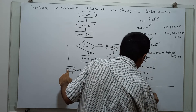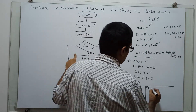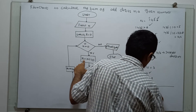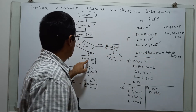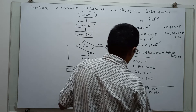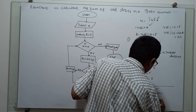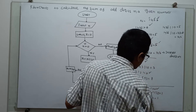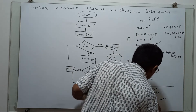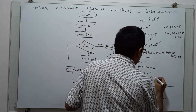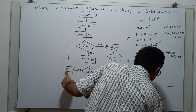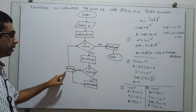Iteration 4: n is 1 now. 1 greater than 0 is true. R equal to 1 modulo 10 — since 1 is less than 10, it returns 1, so R becomes 1. R modulo 2: 1 modulo 2 equals 1, which is not equal to 0, so true. Sum equal to sum plus R: existing sum is 8, plus 1 equals 9. N equal to 1 divided by 10 using integer division equals 0, and the fraction part is omitted.